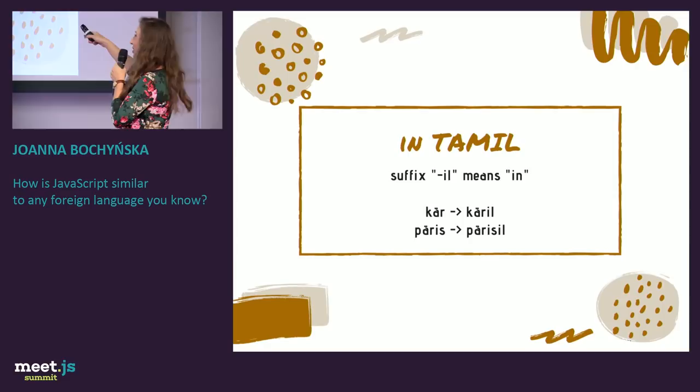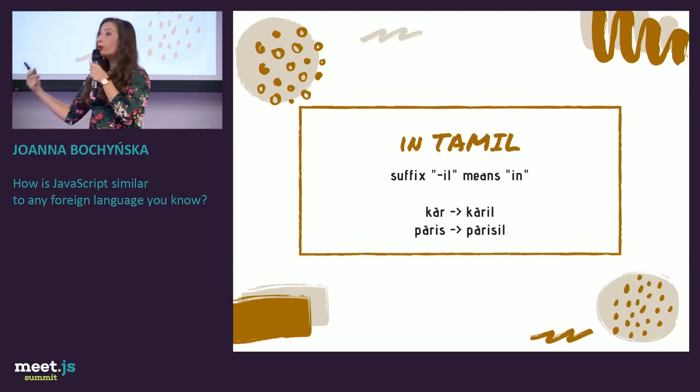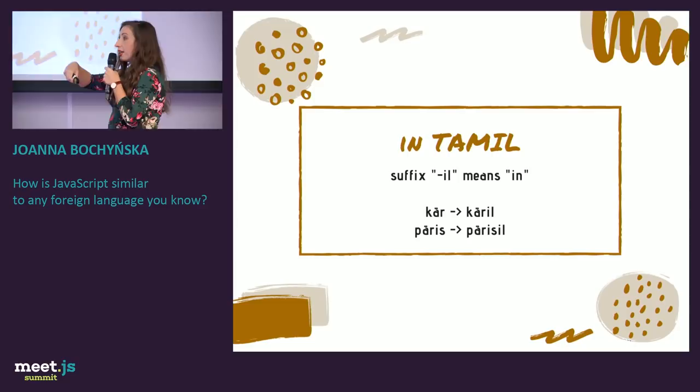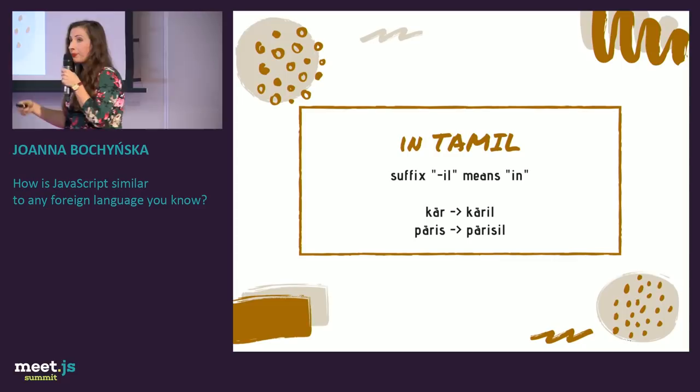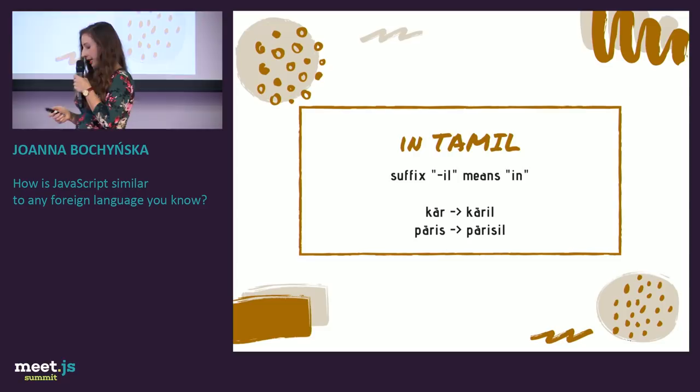'Paris' — so 'Parisil' means 'in Paris.' Now you know the rule: when given a word, you can say in Tamil that something is 'in' something. For example, 'in Poznan' would be 'Poznanil.' You don't have to know every word, but you know the rule.